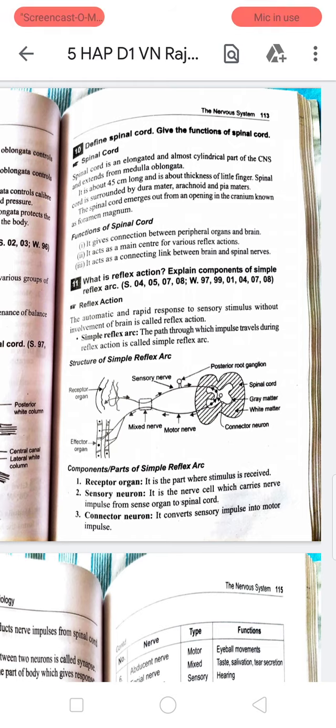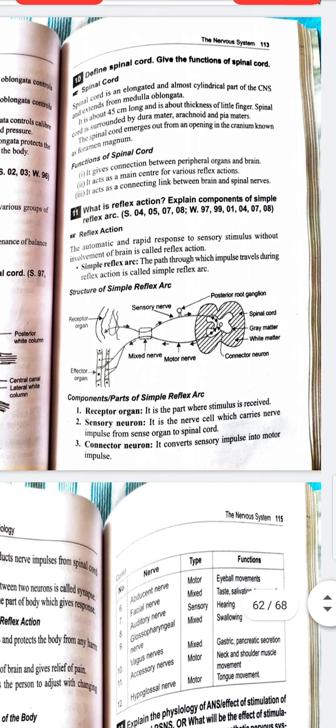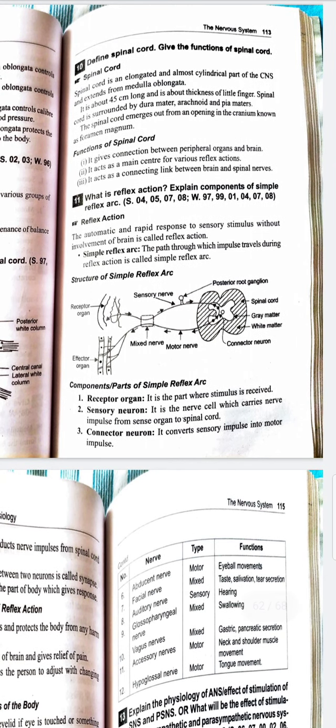Components or parts of simple reflex arc: how the process works, how impulses get transferred from stimulus onwards. First, receptor organ - it is the part where stimulus is received.